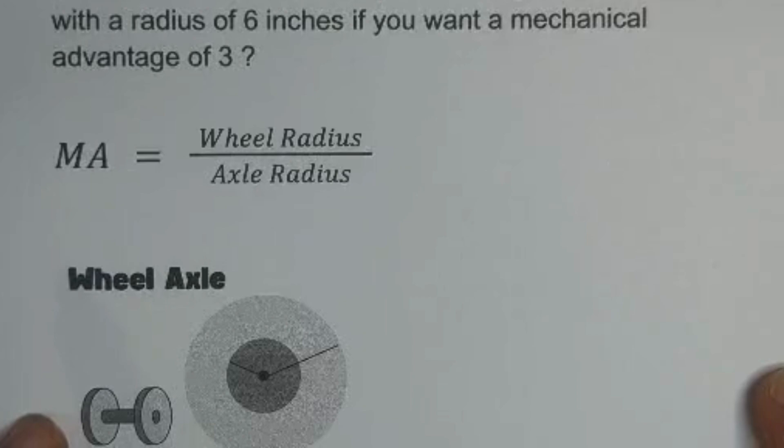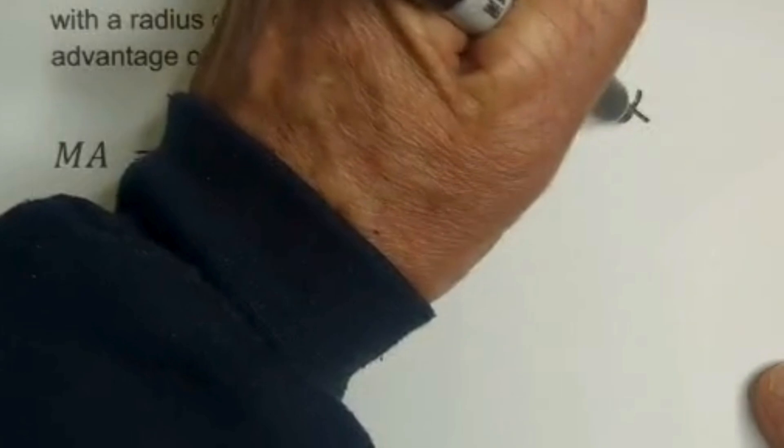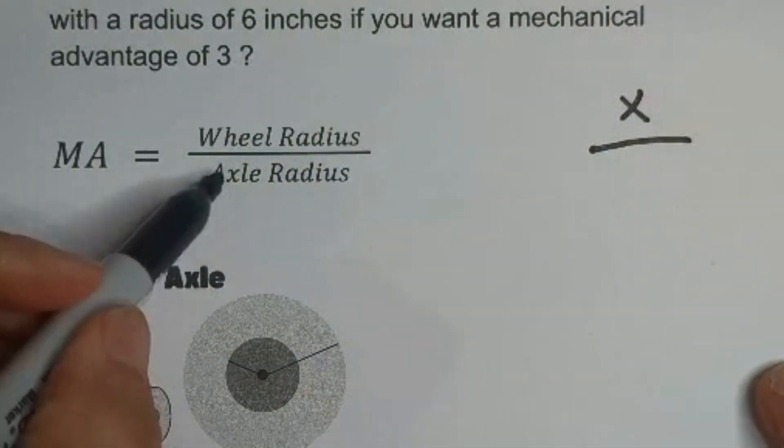So again, let's go ahead and plug it into the formula. Let's see what we have. We have a wheel radius. That's what we're trying to find. That would be x. The axle radius is 6 inches.